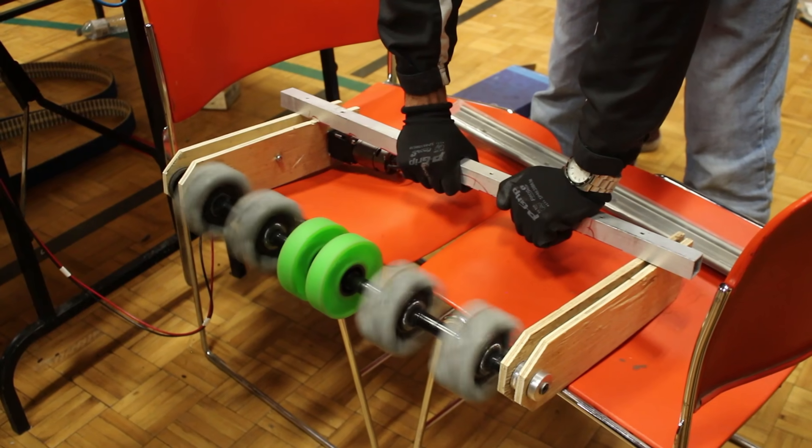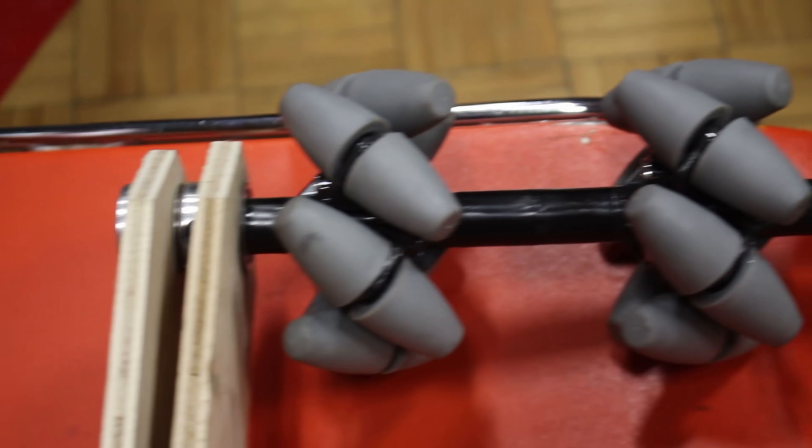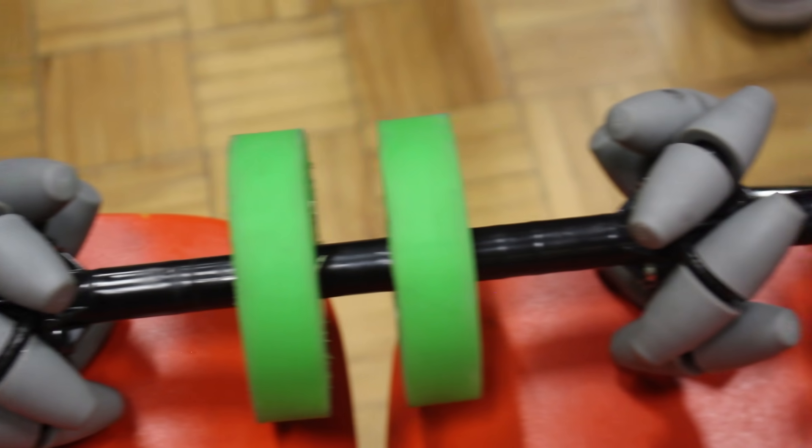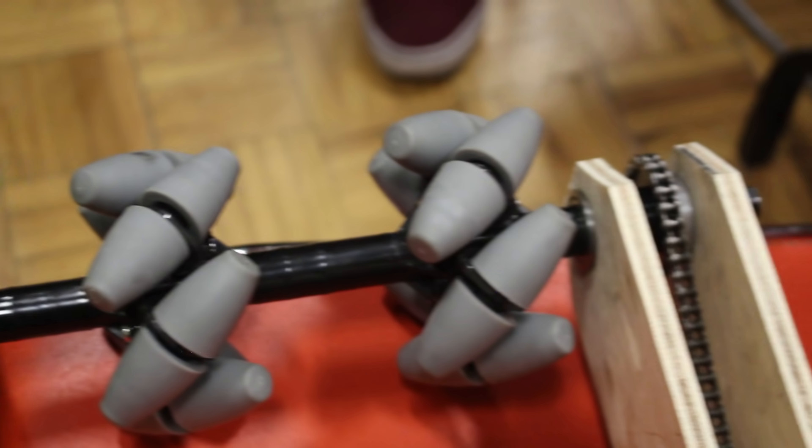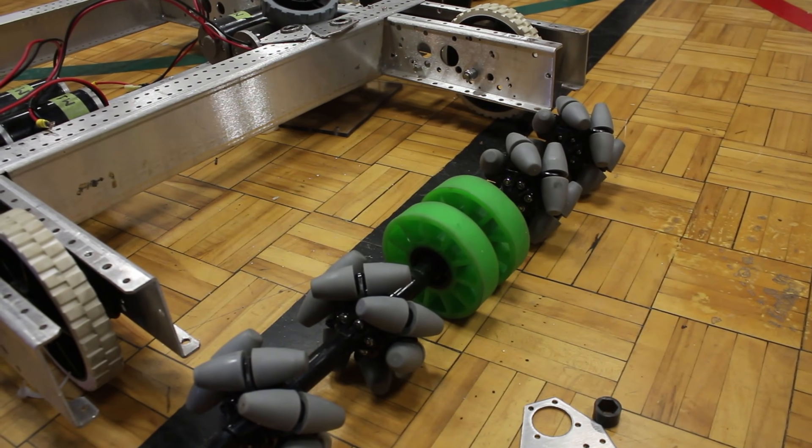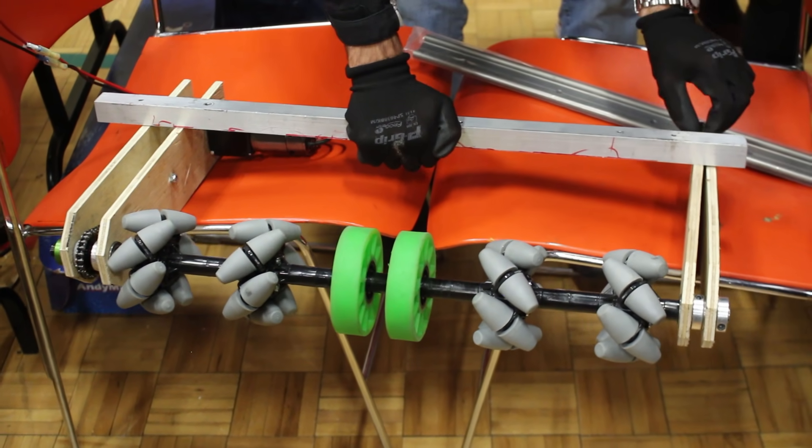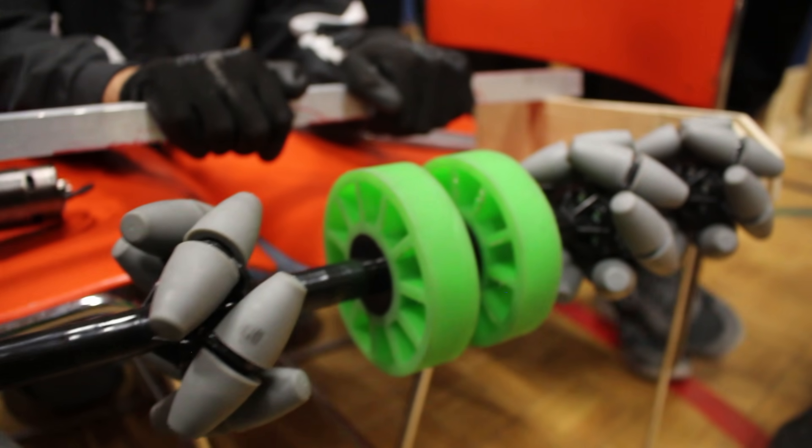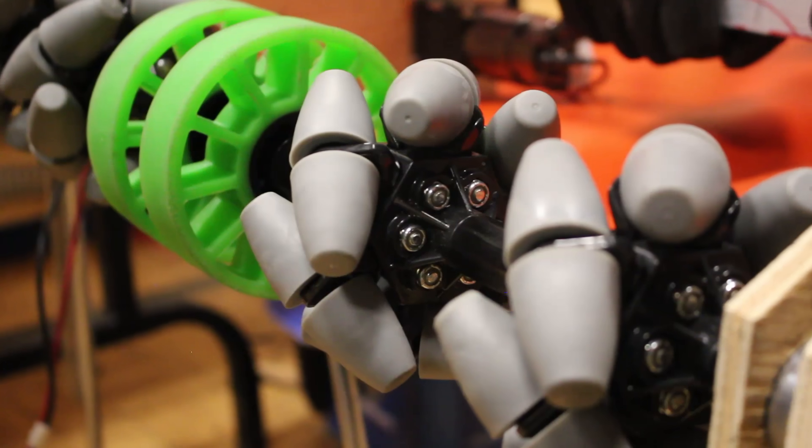I've been working on the ball intake mechanism. This mechanism is used to transport balls from the floor up to the hopper. We decided to use mecanum wheels on the roller so the balls get pushed into the middle of the robot and brought up to the hopper.